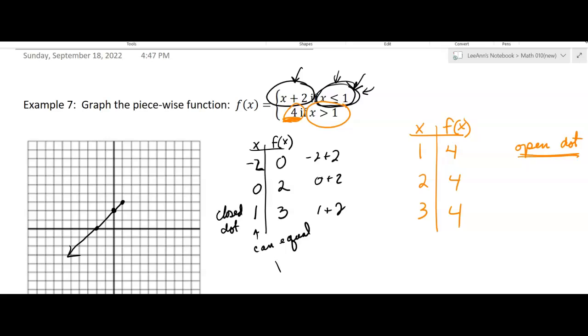So I can graph those. 1, 4, but it's going to be an open dot. And then it's going to be 2, 4, 3, 4, and so on. So it looks like that. So it's an increasing function up to 1, and then it's a constant function after that. That's what the graph looks like.